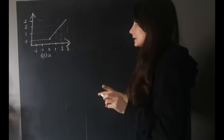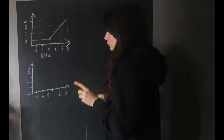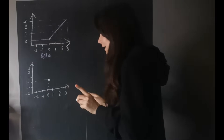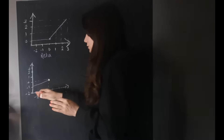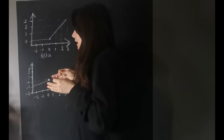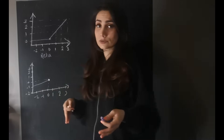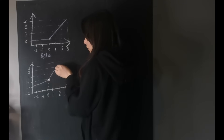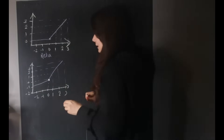Leaky ReLU is a little bit different. When I'm at 0, I'm at 0. But when I have negative values, I'm not going to be at 0 still. There's a slight leak — it slightly goes down. The relationship is not 1-to-1, but it goes a little bit toward negative. It's going to be a little bit less than 0. The positive values are the same, but the negative ones decrease a little bit. That's how Leaky ReLU looks.